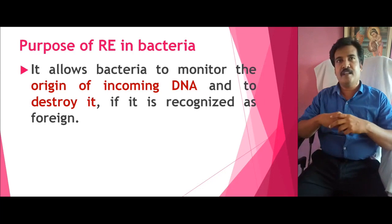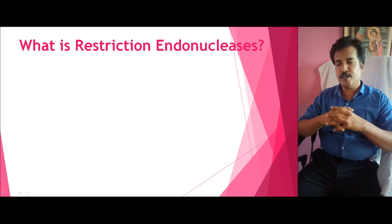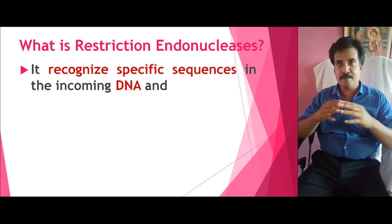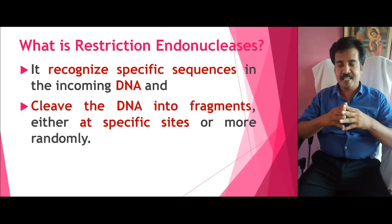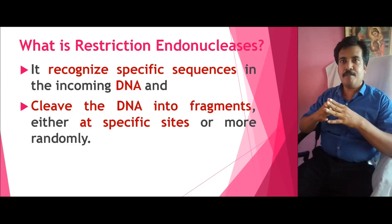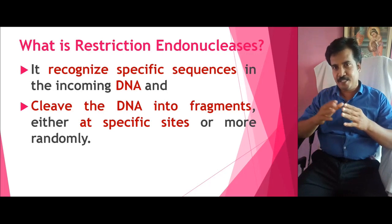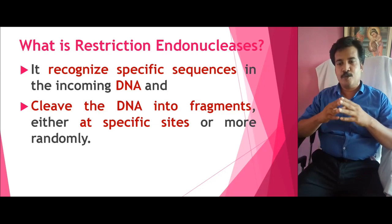If we put a brief definition: a restriction endonuclease is an enzyme which recognizes a specific sequence of DNA and then cleaves — that is, cuts — the DNA into fragments, either at its specific sites or randomly. In other words, a restriction enzyme is a protein molecule that identifies a specific sequence in the DNA and then cuts at that sequence or at different locations very precisely.